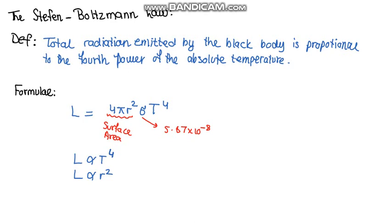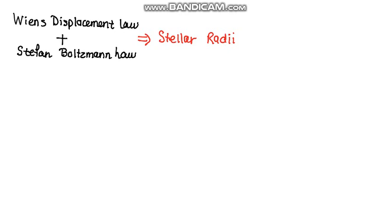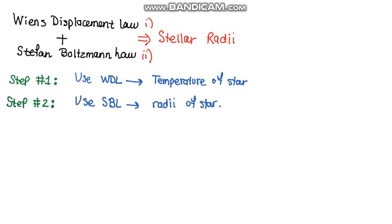Now let's combine the Wien's displacement law and the Stefan-Boltzmann law to determine the stellar radii. So this is a two-step process. Step number one is we have to use Wien's displacement law to determine the temperature of the star, and step number two is we need to use the temperature in the Stefan-Boltzmann law and calculate the radii of the star. So this is a two-step process to conclude the radii of the star.